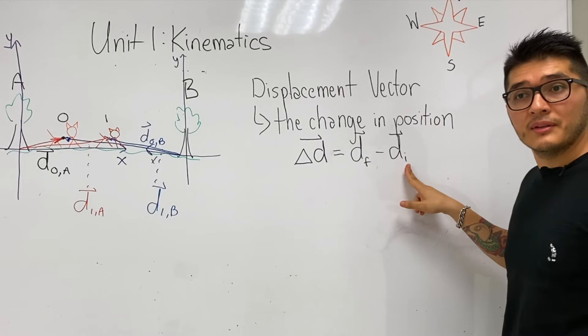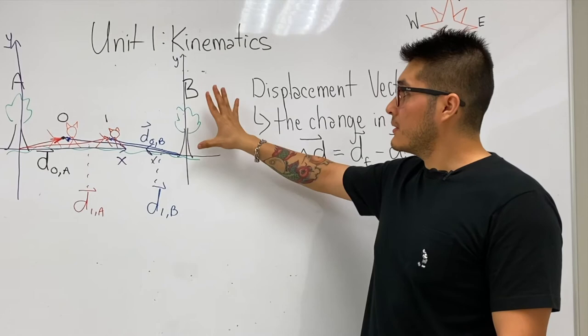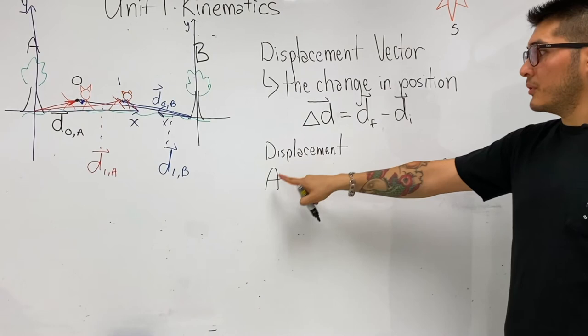We want to do some calculations here. Let's try to calculate the displacement considering tree A separately and consider tree B separately, from the A point of view and the B point of view. Let's write the two equations.